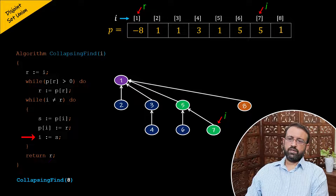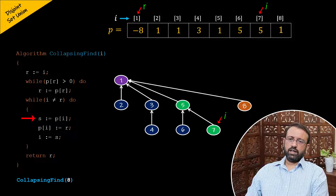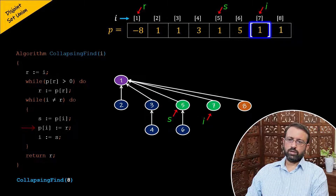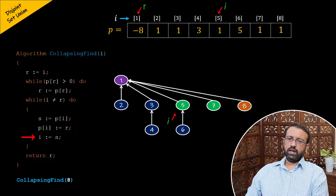Now i is 7 and r is 1, so the condition 7 not equal to 1 is true and the loop executes again. The statement s assigned p of i sets s to p of 7, which is 5. Then p of i, that is p of 7, is assigned r which is 1 — so the parent of node 7 becomes node 1, the root. Then i is assigned s, so i becomes 5.